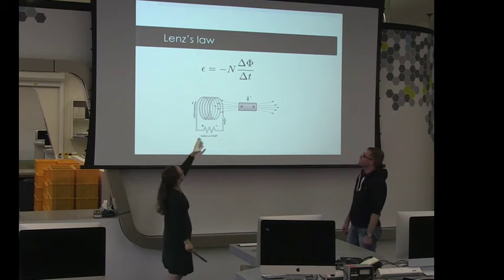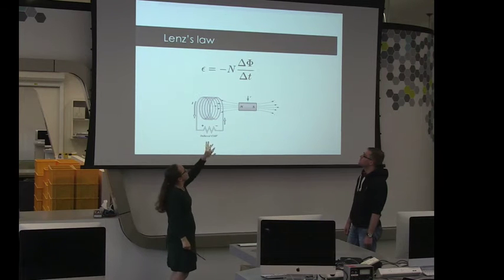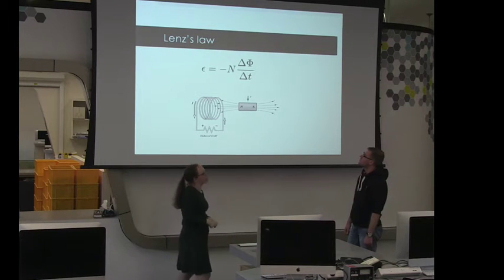So Lenz's law can be written as minus N, where N is the number of turns, times the change in magnetic flux over the change in time.